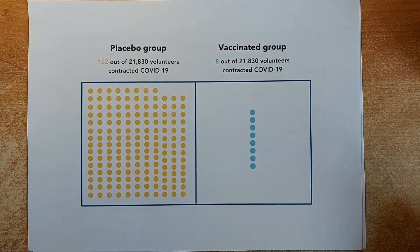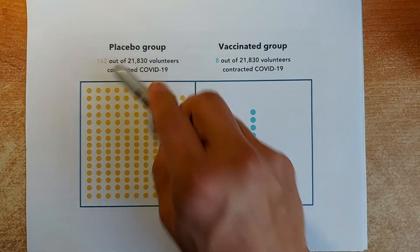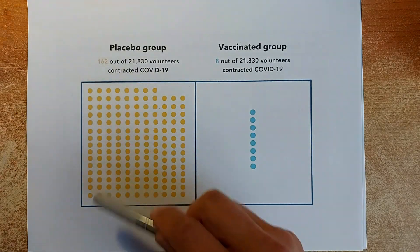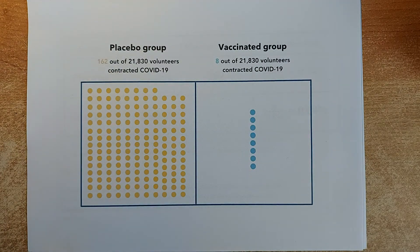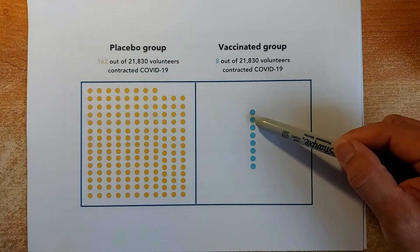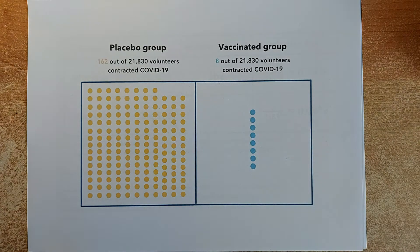So what happened in the test is that after a period of time, in the placebo group, out of the 21,830, 162 people got the COVID-19 disease. While in the vaccinated group, only 8 of those who got the vaccine got the COVID-19 disease.